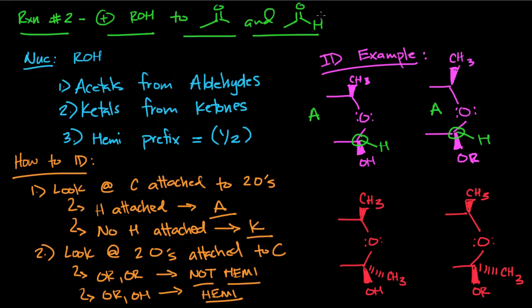Now on the other hand, if there's no H attached, you're dealing with a ketal. So here there's no H attached to the carbon that's attached to the two oxygens, so these are both going to be either ketal or a hemiketal.